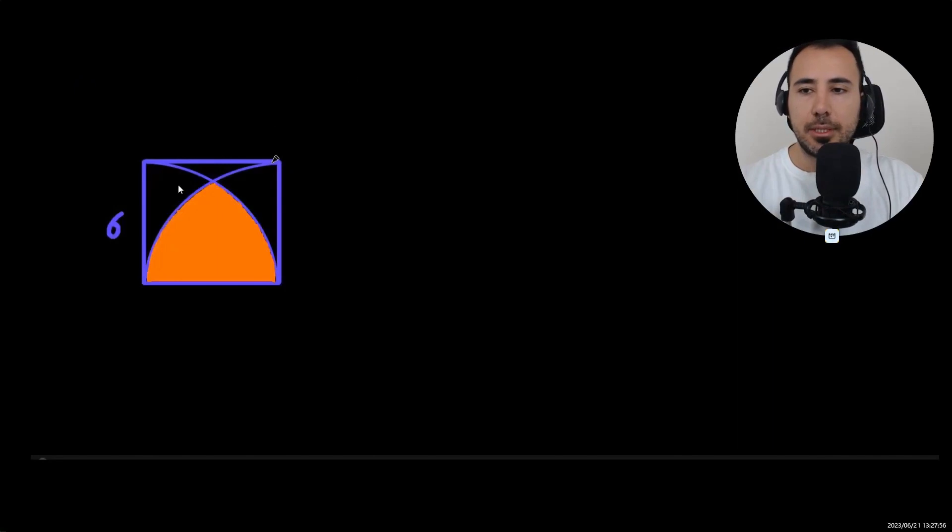Before we start, this is a square with the side of 6 and these are two quarter circles. This is the full circle, you can just see it, and this is the quarter circle.